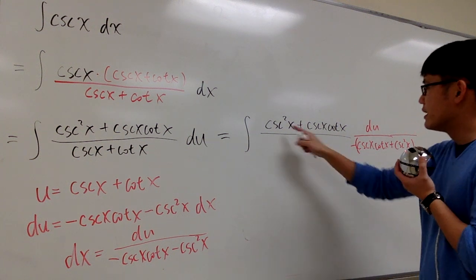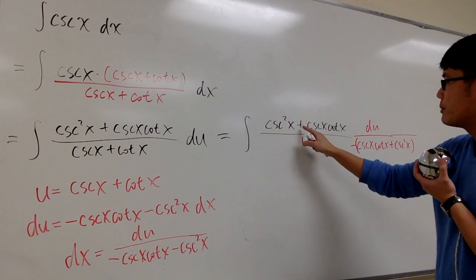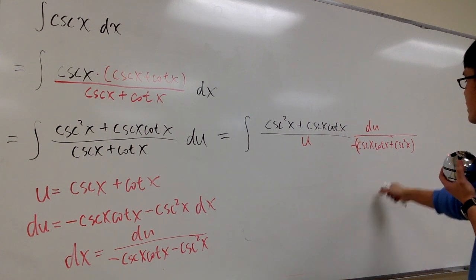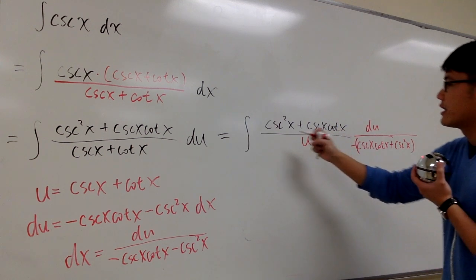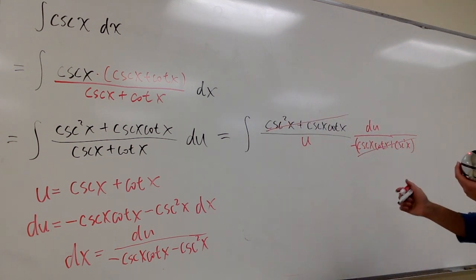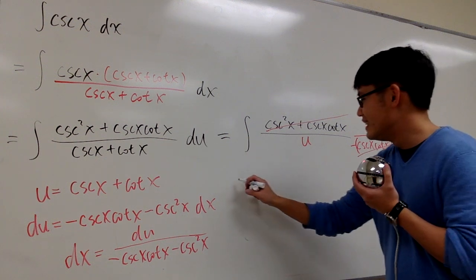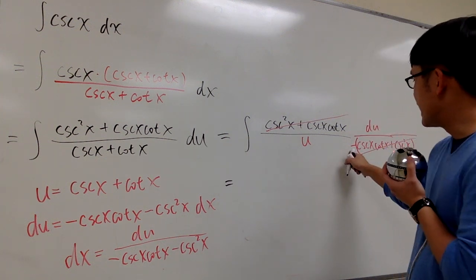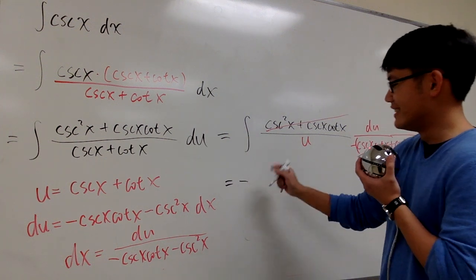This way, as you can see, this is cosecant squared plus cosecant x cotangent x, which is the same as that. So, I can cancel them out. Cancel this. Cancel that. And then we have what? This will be the same as, we have the negative. Let's take it outside.